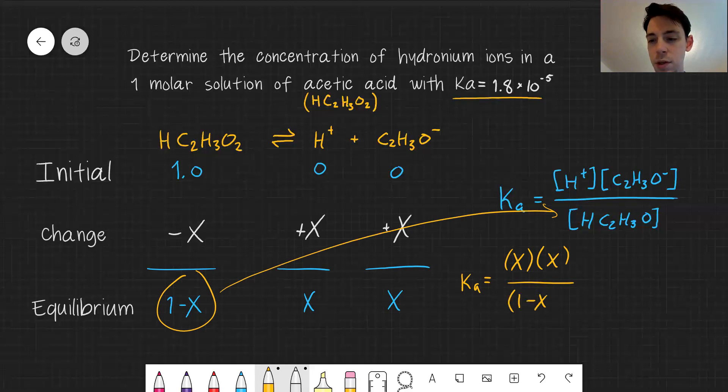The denominator is 1 minus X, and all of this together equals 1.8 times 10 to the minus 5th, or 10 to the minus 5th power.